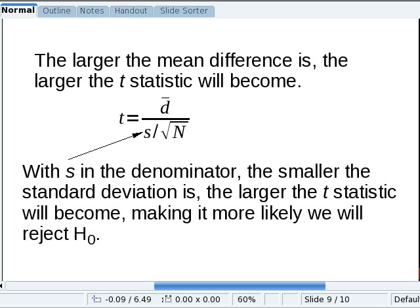So the larger the mean difference is, the larger the t-statistic becomes. And with s in the denominator, the smaller the standard deviation, the larger the t-statistic, and therefore more likely to reject the null hypothesis.